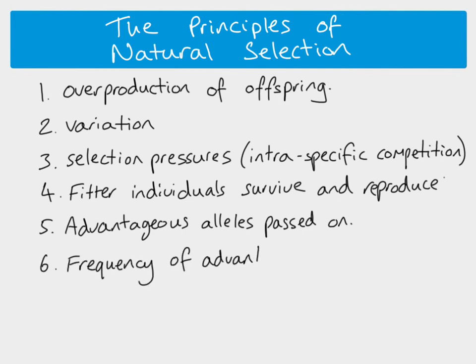The advantageous alleles get passed on, and you end up with an increase in the frequency of those alleles. In our example, if brown color is the advantageous characteristic, due to predation as a selection pressure, those brown individuals are more likely to survive, reproduce, and pass on their brown color alleles — so the frequency of those alleles increases. That is really a summary overview of the whole process of natural selection. We'll look at some other videos to explore the details further.